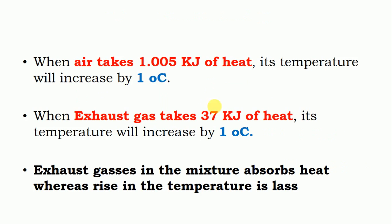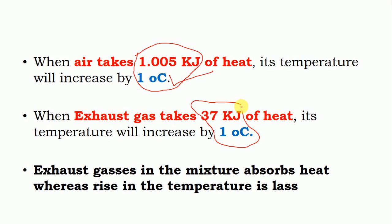Specific heat is the amount of heat required to raise the temperature of a particular element by 1 degree Celsius. So when air takes 1 kilojoule of heat, its temperature will increase by 1 degree Celsius. If you have 1 kg of air and supply 1 kilojoule of heat, the temperature rise will be 1 degree Celsius. Similarly, applying this definition to exhaust gases: when exhaust gas takes 37 kilojoules of heat, its temperature will increase by only 1 degree Celsius.